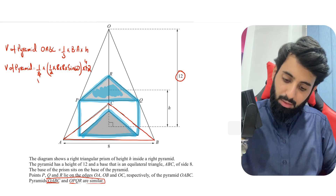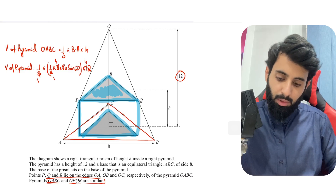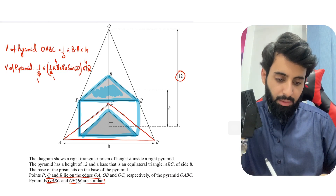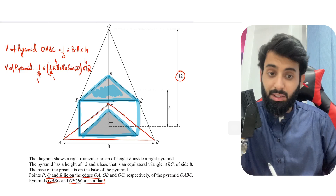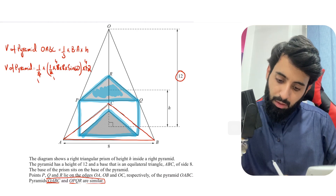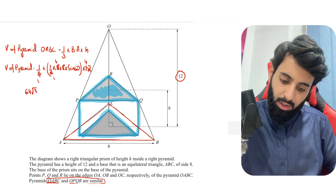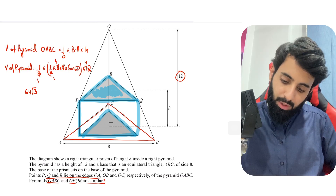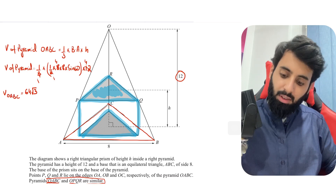Using the calculator: 0.5 × 8 × 8 × sin 60° × (4/3) gives 64√3. Remember to keep the answer in exact form because that's the format required by the question. So the volume of pyramid OABC = 64√3.